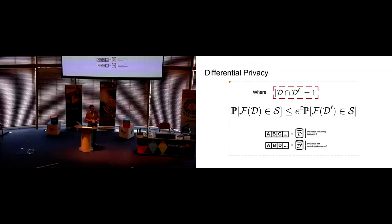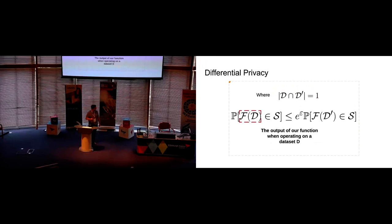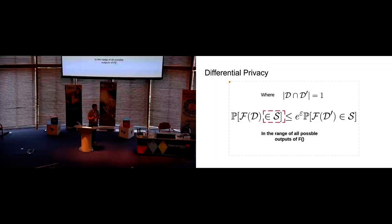So if we just go through this, we have a probability on the left and we have a probability on the right. The output of our function when operating on dataset d, the probability of this, in the range of all possible outputs of s. This is, let's say we were looking for a classification of rainy, mild, sunny. Our range of possible outputs would be our s, rainy, mild, sunny.